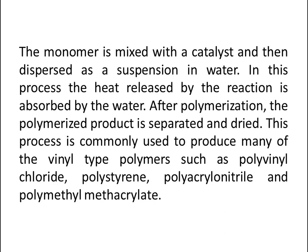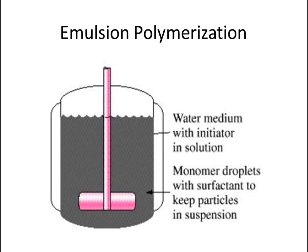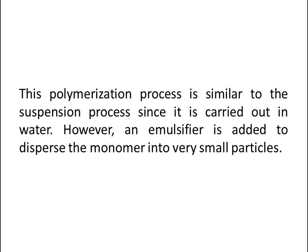This process is commonly used to produce many vinyl-type polymers such as polyvinyl chloride, polystyrene, polyacrylonitrile, and polymethyl methacrylate. Now let's talk about emulsion polymerization. In this process there is a water medium with initiator in solution and monomer droplets with surfactant to keep particles in suspension. The polymerization process is similar to the suspension process since it is carried out in water; however, an emulsifier is added to disperse the monomer into very small particles.